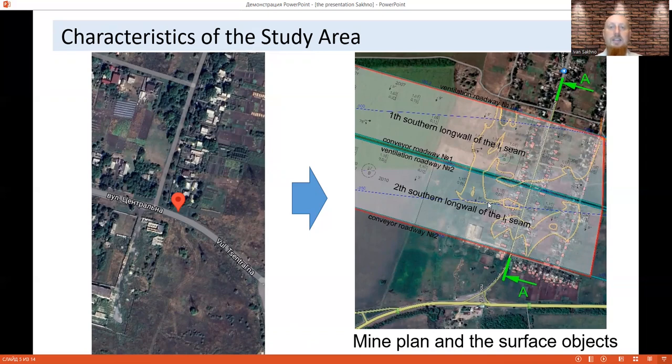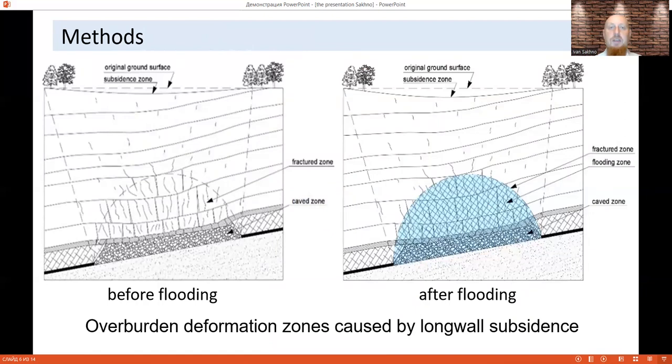The next part is the methods. Traditional ideas about overburden deformation zones caused by longwall subsidence were accepted. The height of the caved zone was taken equal to eight times the thickness of coal seams. The height of the fractured zone was 60% of the length of the longwall.